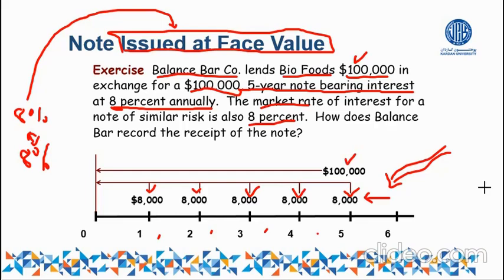Let's go to the solution part. The solution is based on three steps. Step number one is to find the present value of the note receivable, because whatever the present value is, that is what we are going to record in our books of accounts.